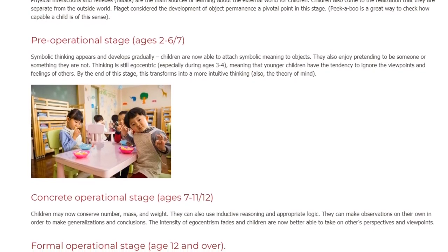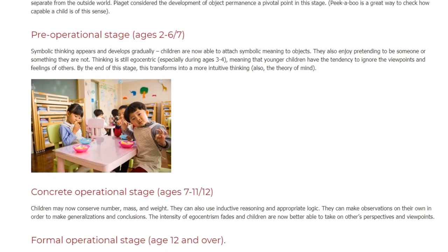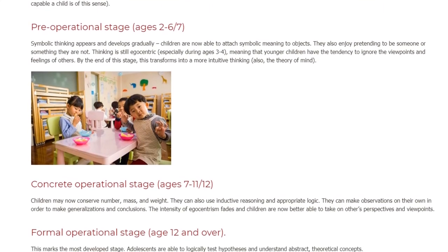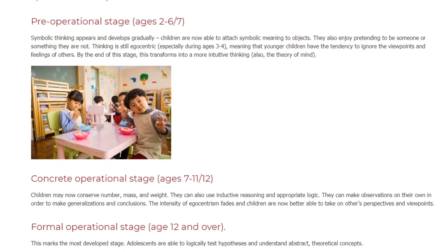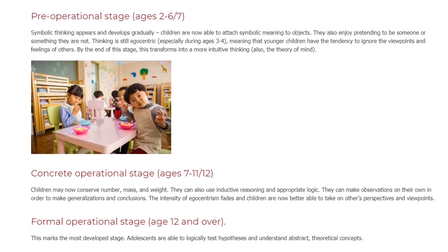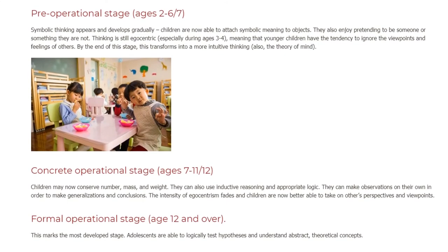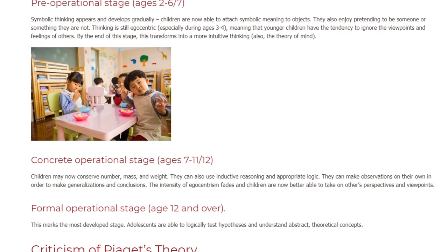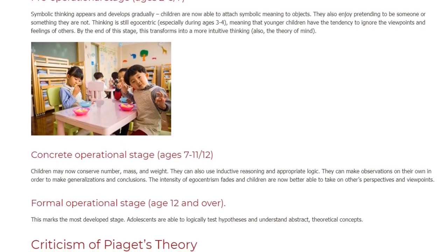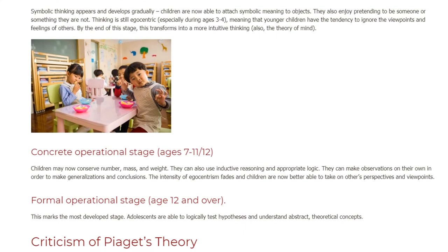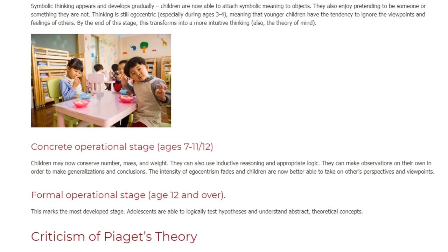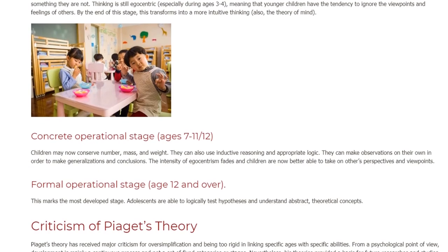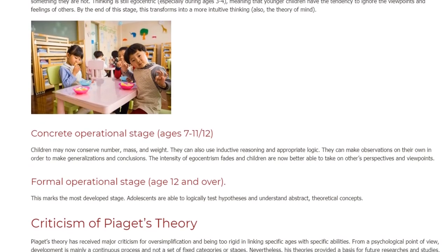The Concrete Operational Stage covers ages 7–11/12. Children may now conserve number, mass, and weight. They can also use inductive reasoning and appropriate logic, and can make observations on their own in order to make generalizations and conclusions. The intensity of egocentrism fades and children are now better able to take on others' perspectives and viewpoints.